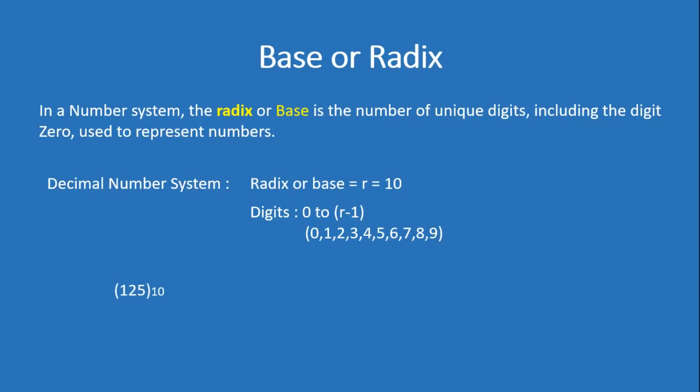Now we have a number 125, and the base written after it is 10, so this is a decimal number. In this number 125, the digit 5 is at the unit place, digit 2 is at the tens place, and digit 1 is at the hundreds place. So 125 equals 1 into 10 squared plus 2 into 10 to the power 1 plus 5 into 10 to the power 0, which is 100 plus 20 plus 5.